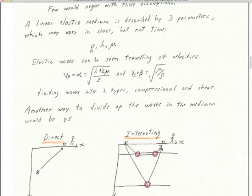With that simplification we see elastic waves traveling at more than two velocities, but here are the two main ones. There's the P velocity alpha, which is the square root of (lambda plus 2 mu) divided by rho. And the shear velocity beta, which is the square root of mu over rho. The shear waves are mainly propagating according to the rigidity modulus. That's one way of dividing up the waves.